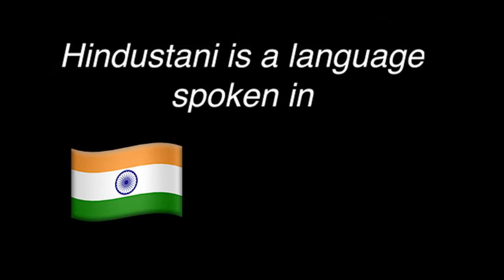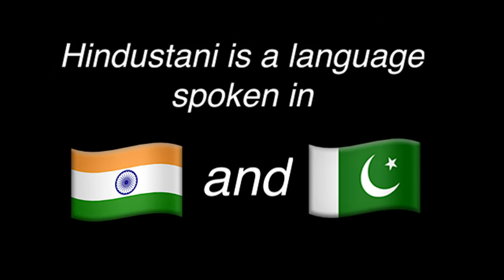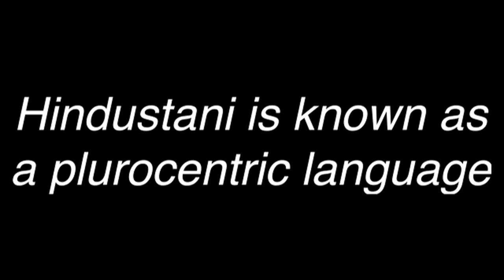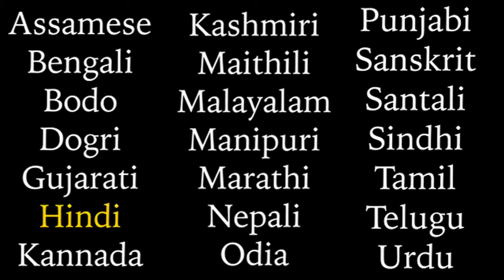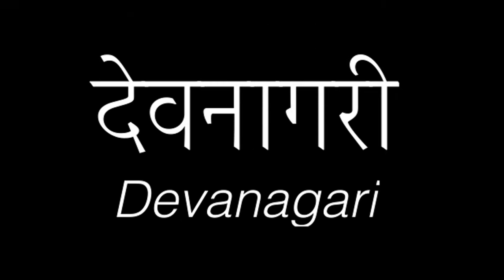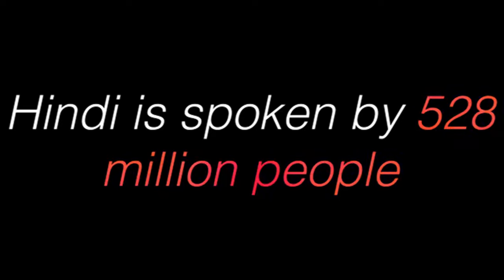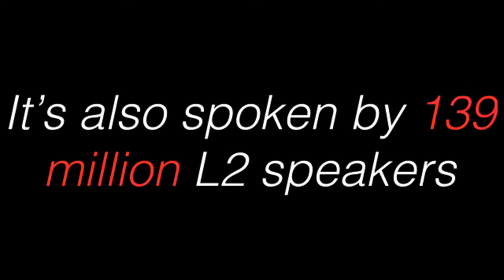Hindustani is a language spoken in India and Pakistan. It's known as a pluricentric language as it has two standard registers, modern standard Hindi and modern standard Urdu. Hindi is one of 22 official languages in India, written in the Devanagari script. It's spoken by 528 million people as a first language and 139 million as a second language.